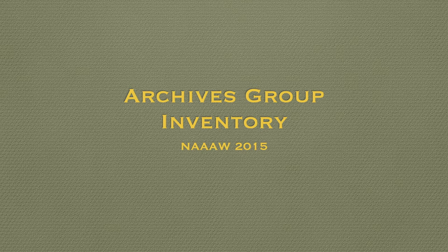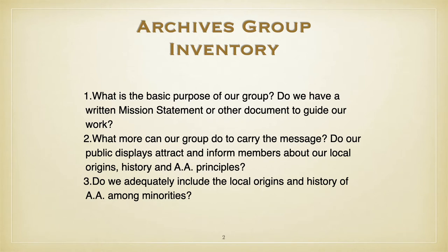Number one: what is the basic purpose of our group? That's a loaded question. We know Tradition Five says the basic purpose of any AA group is to carry the message. Do we have a written mission statement or other document to guide our work? A mission statement might sound like an unnecessary formality, but I've found them real useful in projects — we'll run off in all kinds of directions and sooner or later come back to the mission statement and go, 'oh, that's not in the scope of our mission.'